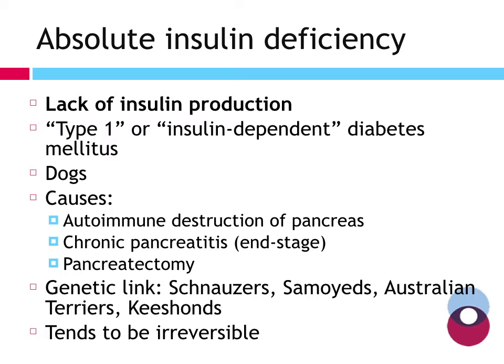There's also a genetic link — some breeds are far more likely to develop diabetes. Schnauzers are three to four times as likely as your average mixed breed dog. The Australian terrier, which we see very infrequently, is 32 times as likely to develop diabetes. Given the mechanisms behind absolute insulin deficiency, this tends to be irreversible.